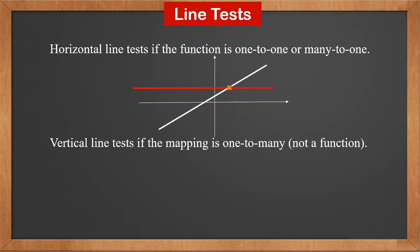Vertical line tests if a mapping is 1 to many, hence not a function. For this curve, we draw a vertical line. It hits the curve at 3 points. That means one x is mapped to 3 different y's. Therefore, it's a 1 to many mapping and not a function.